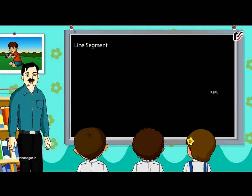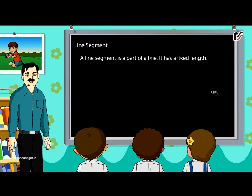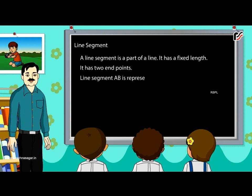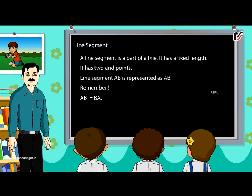Line segment. A line segment is a part of a line. It has a fixed length and two end points. Line segment AB is represented as AB. Remember, AB is equal to BA.